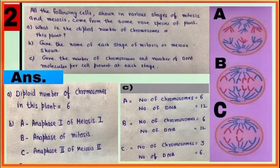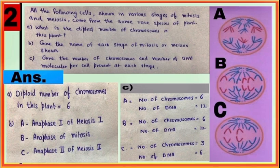Question number two, here three stages A, B, and C are shown where A is anaphase one of meiosis one, B is anaphase of mitosis, and C is anaphase two of meiosis two. Check answers of all parts of this question given below.